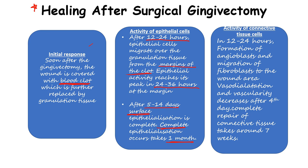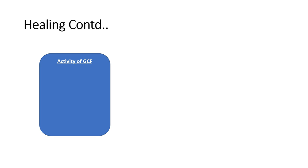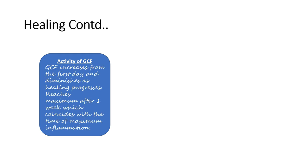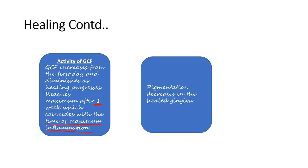Now, activity of connective tissue cells: in 12 to 24 hours, formation of angioblasts and migration of fibroblasts occur in the wound area. Vasodilation and vascularity increase up to the 4th day and start decreasing after the 4th day. Complete repair takes place in 7 weeks. Fourth is activity of GCF: GCF increases from the first day and diminishes as healing progresses, but it reaches its maximum after 1 week, which coincides with the time of maximum inflammation. Fifth is pigmentation: in the healed gingiva, pigmentation decreases.